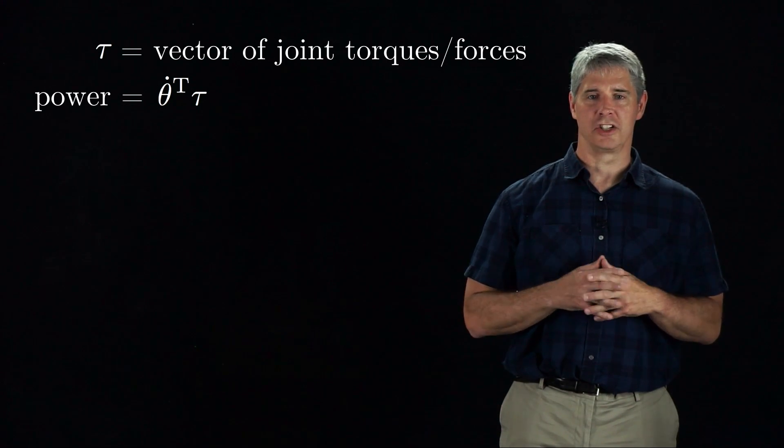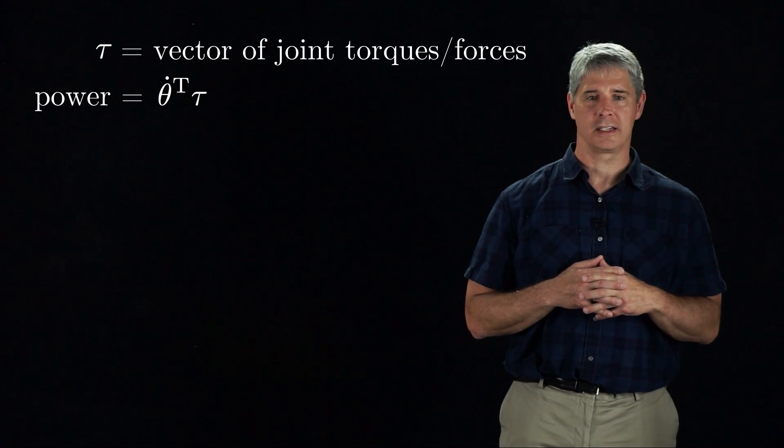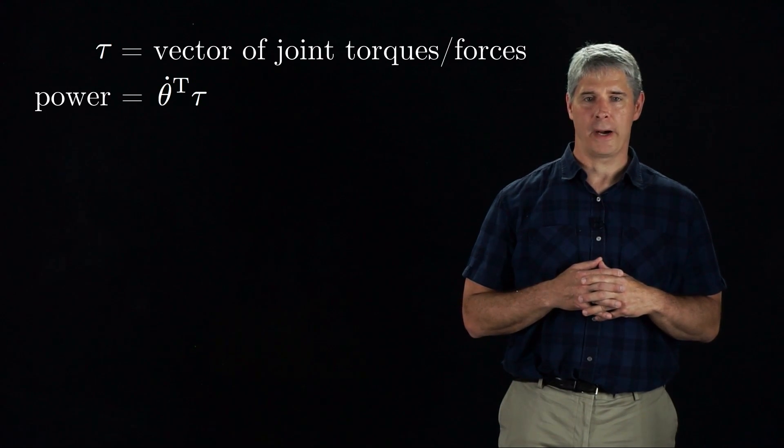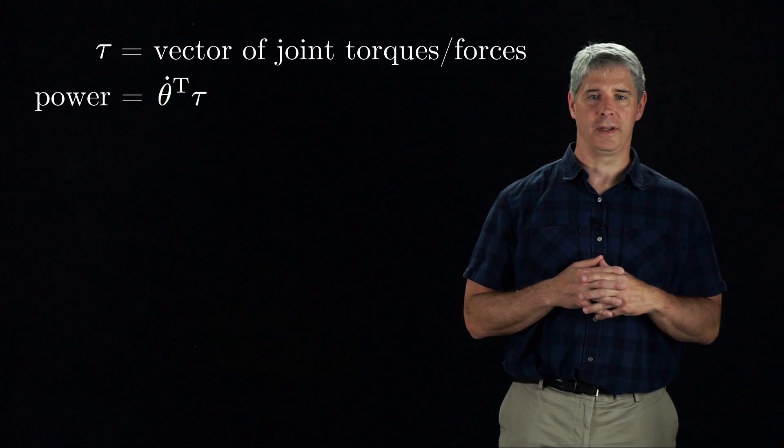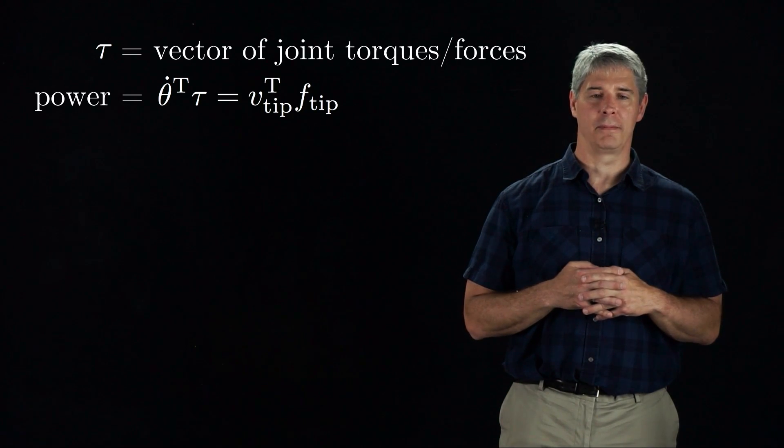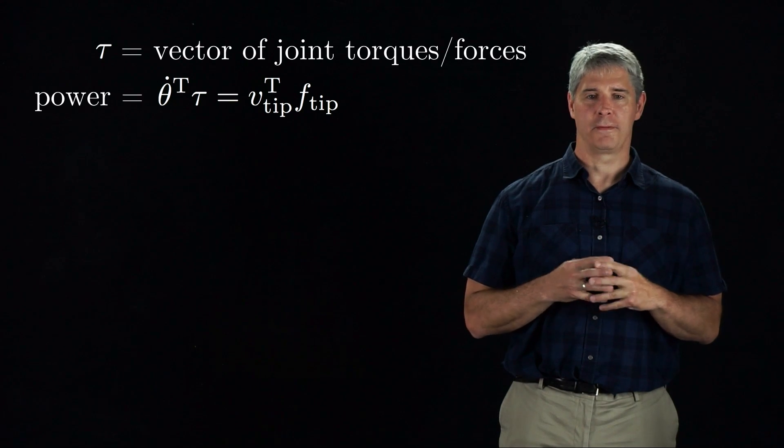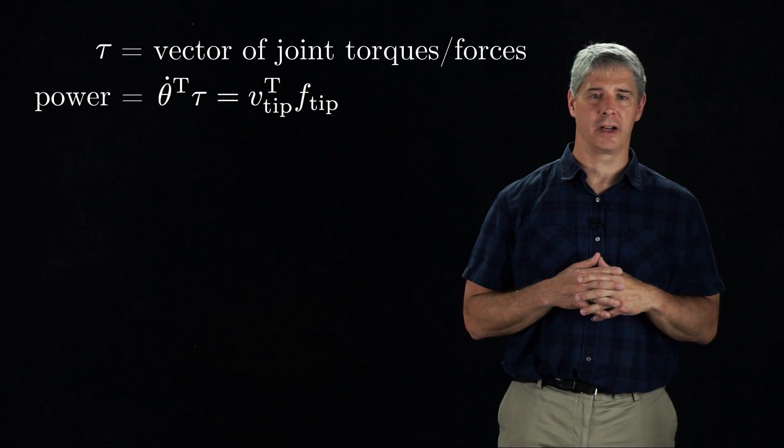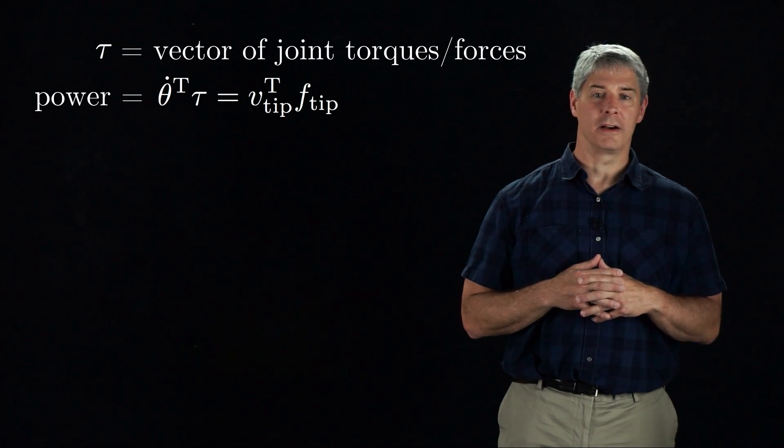The robot's velocity and joint torques could instead be expressed in terms of a velocity and force at the tip. So the power can be written equivalently as v-tip transpose times f-tip, where f-tip is the force applied by the end effector. If no power is used to move the robot, then theta dot transpose times tau is equal to v-tip transpose times f-tip.